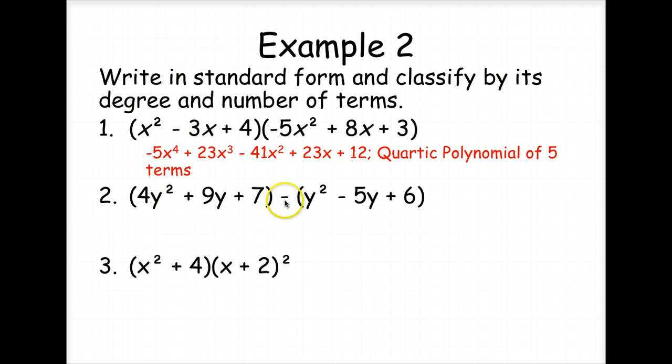This one we're not multiplying except this second set by negative 1. We don't have to multiply every term by every term. So, 4y squared minus y squared, 3y squared. 9y plus 5y is 14y, and 7 minus 6 is 1. The largest exponent is 2, so we've got a quadratic, and there are three terms, so it's a trinomial.